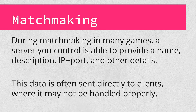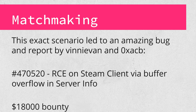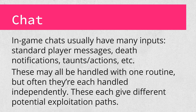Let's talk about some real potential target areas and bugs people have found. In matchmaking scenarios where you can run your own server, you get to provide a server name, IP, port, and other info — which typically gets forwarded right to the client. In a scenario just like this, Vinnyvan and OXACB found a buffer overflow in the way Steam handled this data, leading to remote code execution and an $18,000 bounty. We also mentioned chat earlier — it bears mentioning as a target in itself. There are usually a lot of different inputs to in-game chat, meaning a lot of possibilities for attack, from a buffer overflow in message length to crashing the client via an improperly formed message color code. This can be a surprisingly rich area for exploitation.